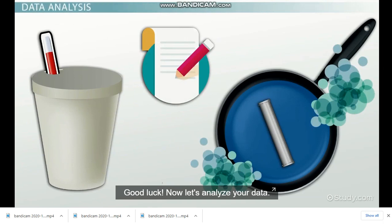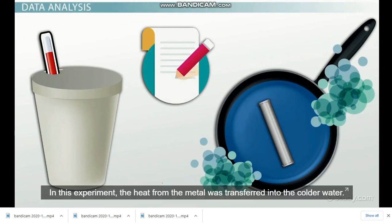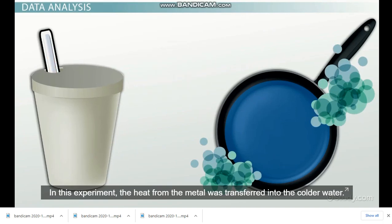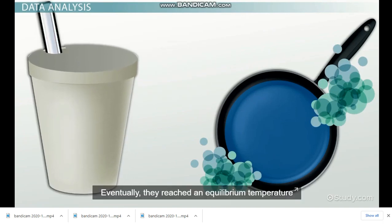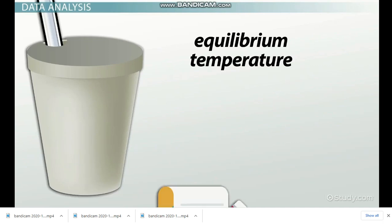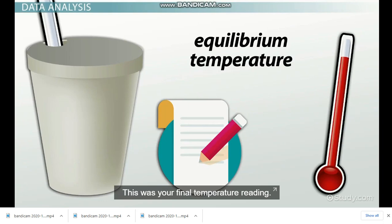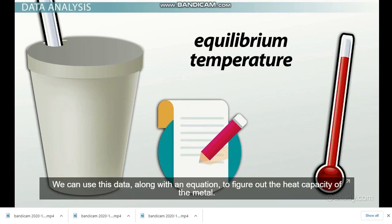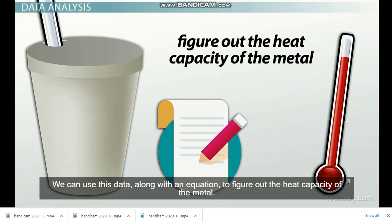Now it's time to analyze your data. In this experiment, the heat from the metal was transferred into the colder water. Eventually, they reached an equilibrium temperature, an equal temperature in between the two starting temperatures. This was your final temperature reading. We can use this data along with an equation to figure out the heat capacity of the metal.